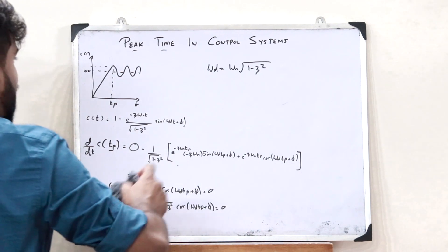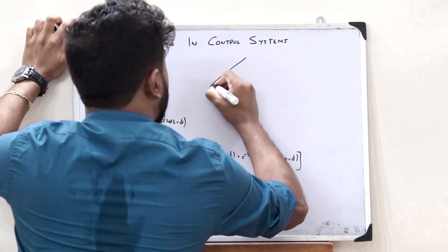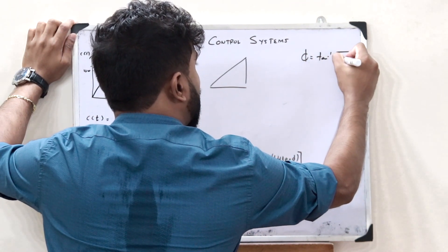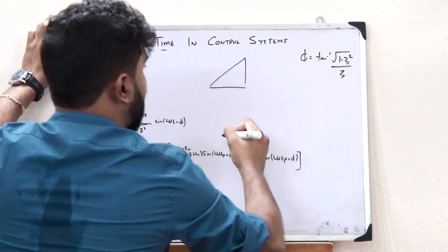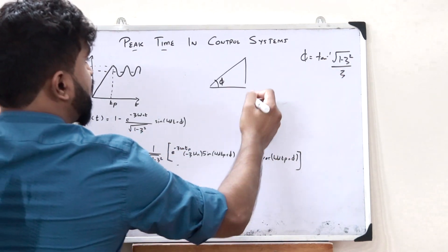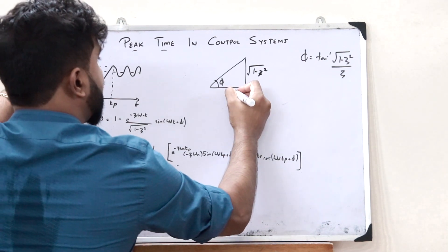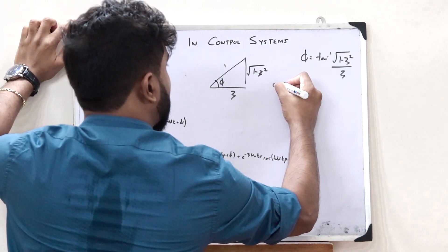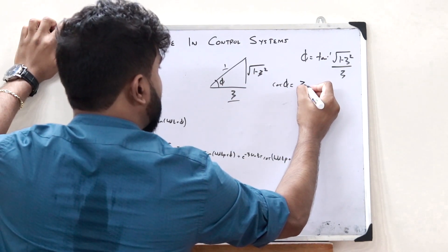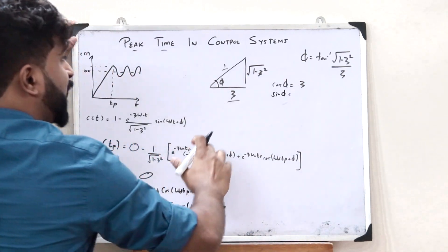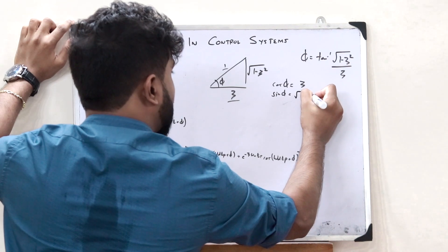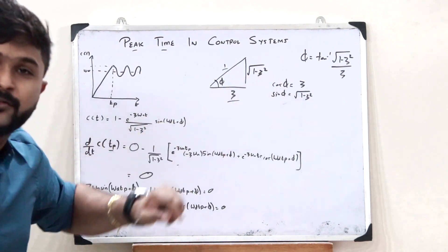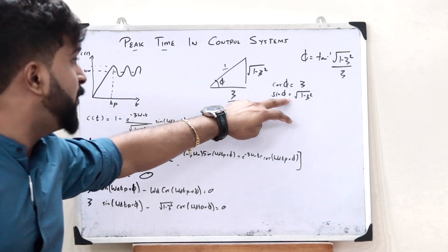When we consider a right-angled triangle, we know phi = tan inverse of root of 1 minus zeta squared divided by zeta. So tan phi equals opposite over adjacent, giving us opposite = root of 1 minus zeta squared, adjacent = zeta, and hypotenuse = 1. Therefore, cos phi = zeta and sin phi = root of 1 minus zeta squared. Substituting these, zeta becomes cos phi and root of 1 minus zeta squared becomes sin phi.